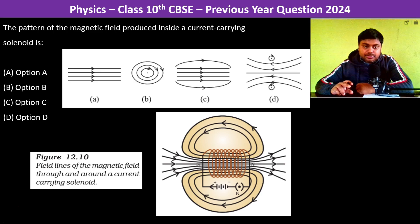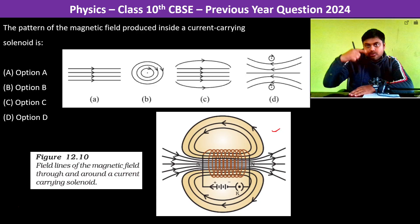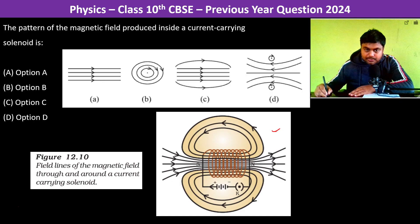This is mentioned in figure 12.10 of NCERT. If you see, this is the solenoid. Solenoid is basically coiled and then it is connected across a battery.